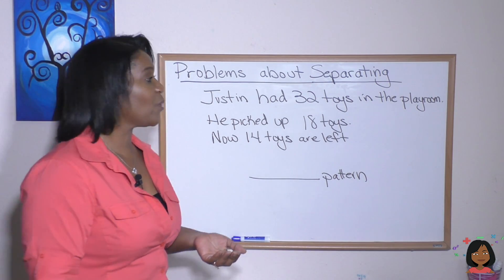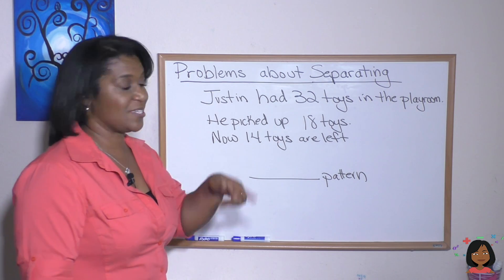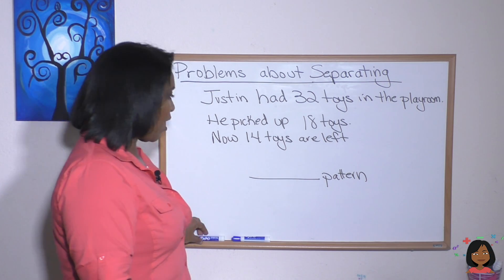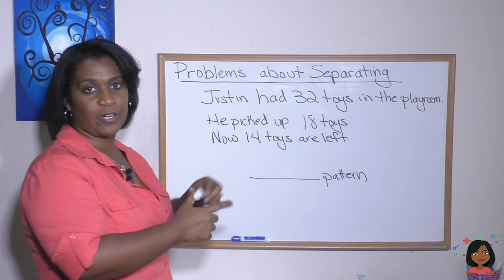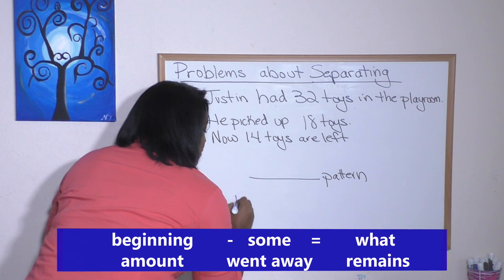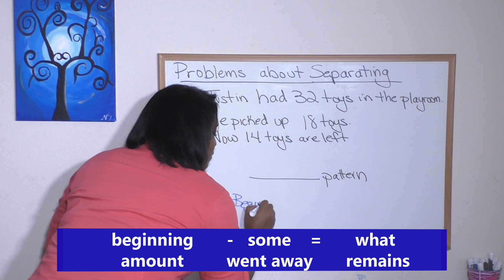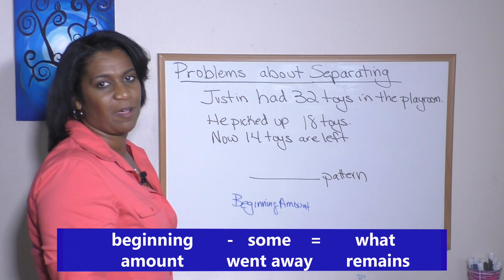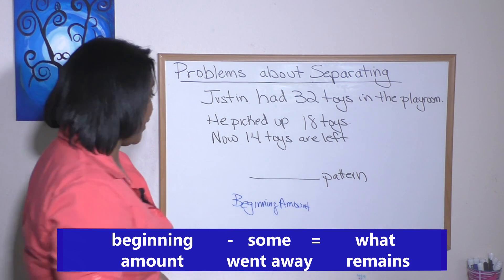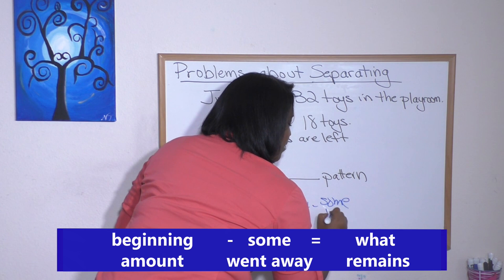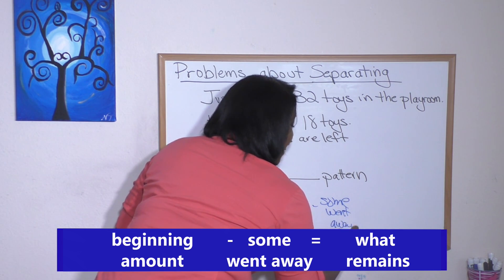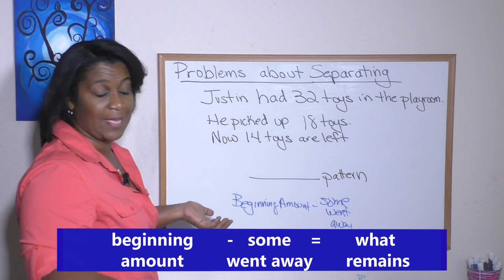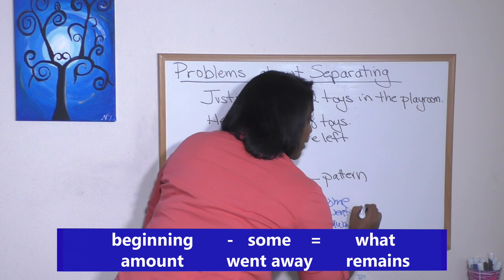Here's my first example. Justin had 32 toys in the playroom. He picked up 18 toys. Now 14 toys are left. So what do we call this? Well, what's happening? There was a certain amount in the beginning — I'm going to call that the beginning amount. Then he picked up 18 of them, so some of them went away. And now you can see that there are 14 toys left, or a certain amount that remains — what remains, or what is left.